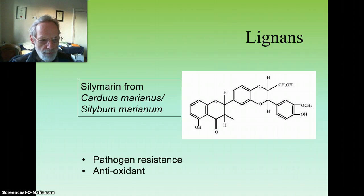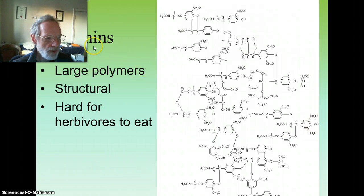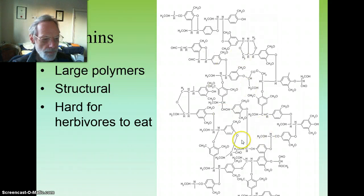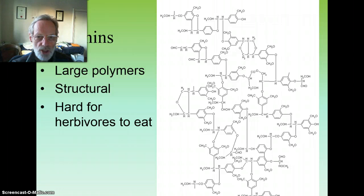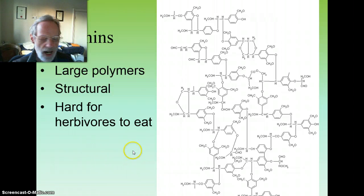Lignans are also involved in pathogen resistance and are additionally antioxidant. Not to be confused with lignins, which are large phenylpropanoid polymers giving structure to wood. Similar compounds — suberins give structure to cork, and cutanes, very similar to lignins, are polymers important in the structure of bark. Basically, these large polymers are hard for herbivores to eat as well as giving structure to the plant.